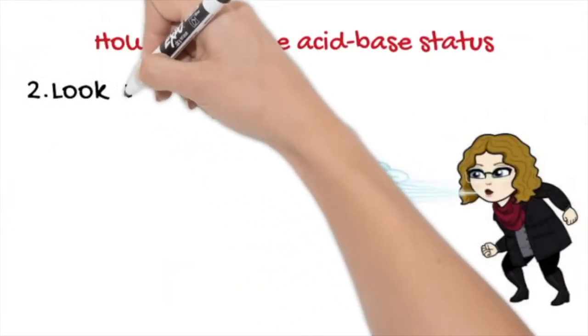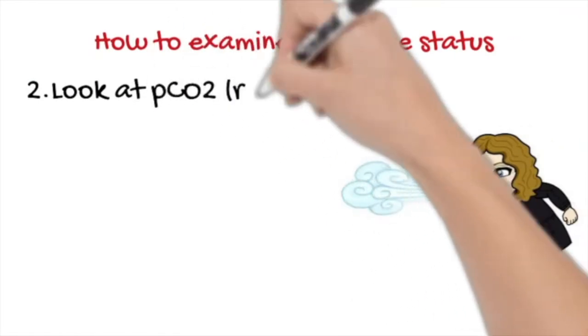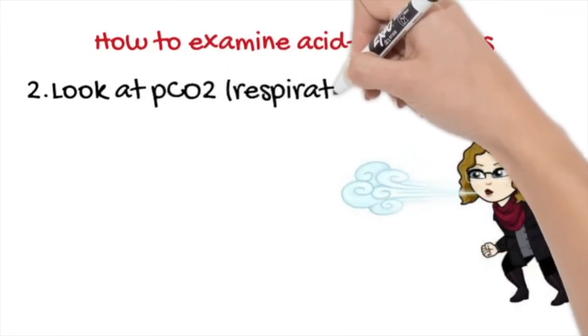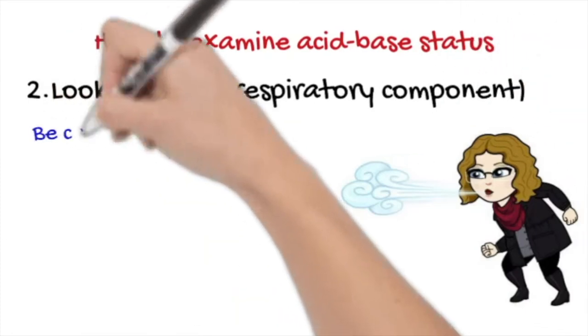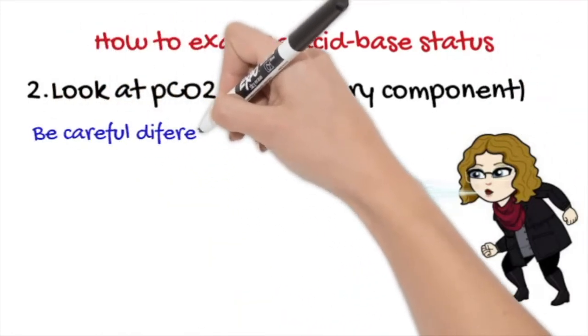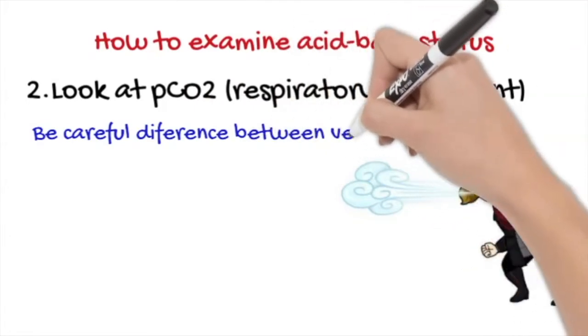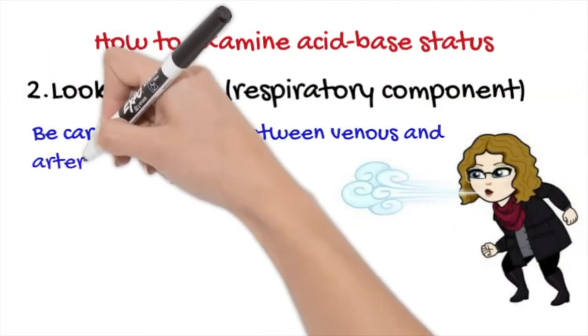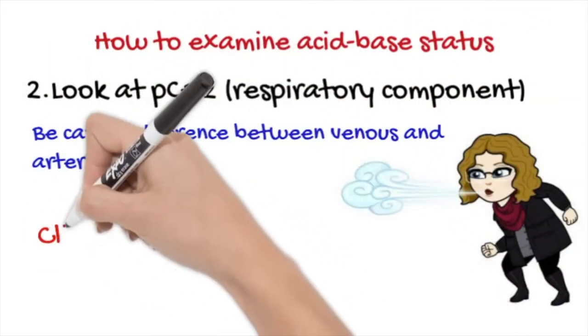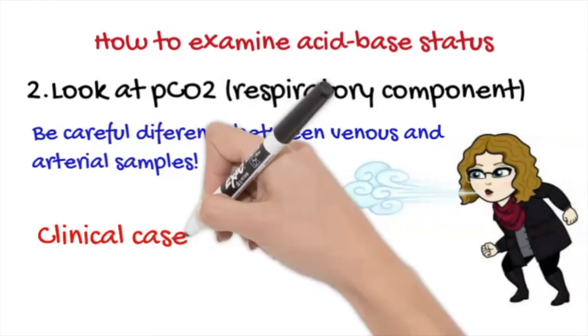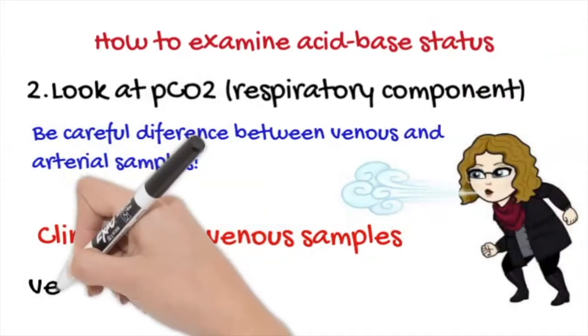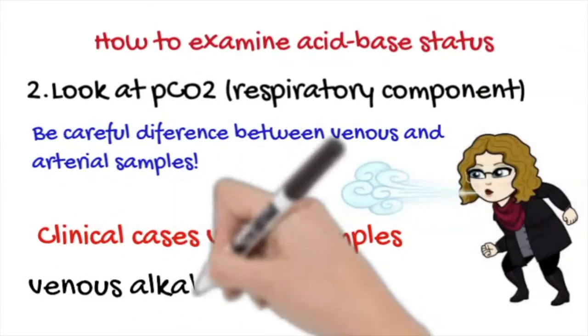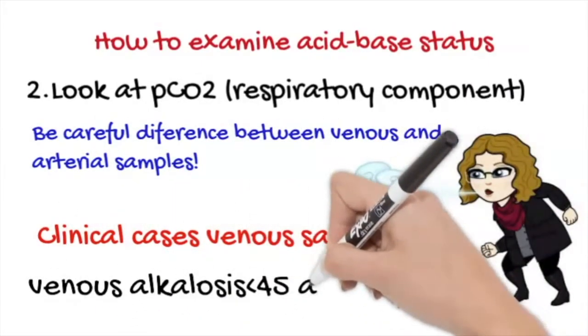The second step is to evaluate the respiratory component of the acid-base. The gases that you are going to see later are venous gases, therefore the reference values are slightly different, especially in the oxygen and pCO2 concentration. Taking into account the venous origin of our samples, we will look at the pCO2. If the value is below 45, the horse has respiratory alkalosis.